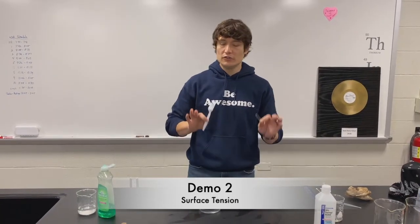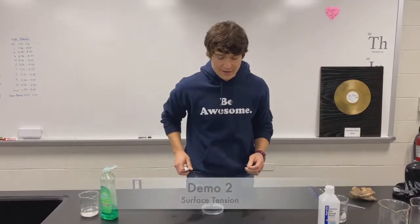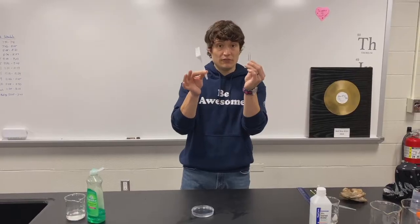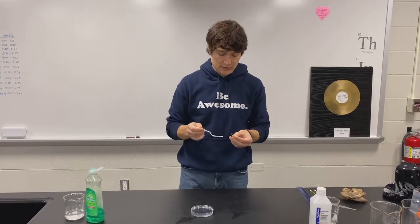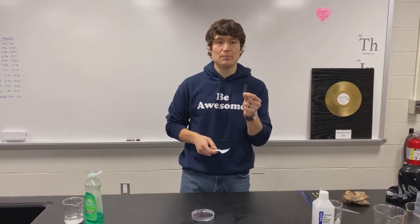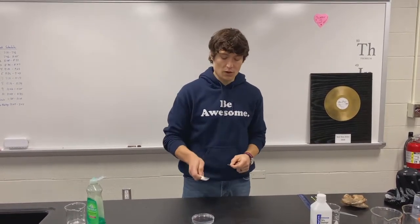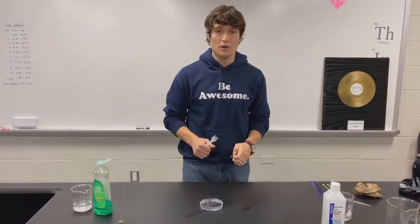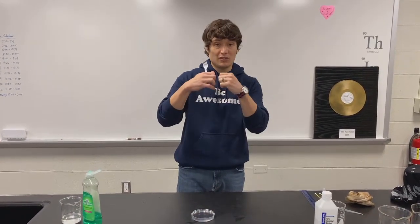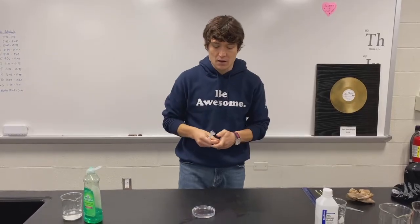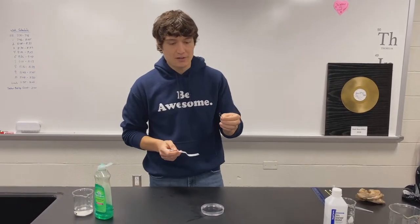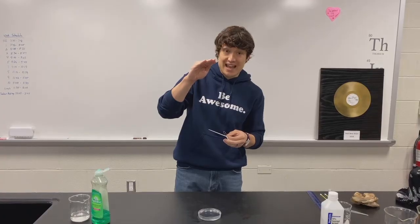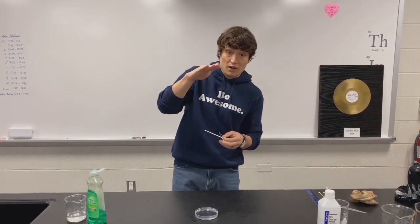Now we're going to take a look at surface tension. This one's super simple — you don't need a petri dish like I have; you could do this with anything that holds water, and a paper clip. A fork helps, but you can try with your fingers. Now, a paper clip is not buoyant — if I threw it into the water it would sink right to the bottom. However, through the process of cohesion, those water particles hang on to each other through the hydrogen bond, creating surface tension at the top.